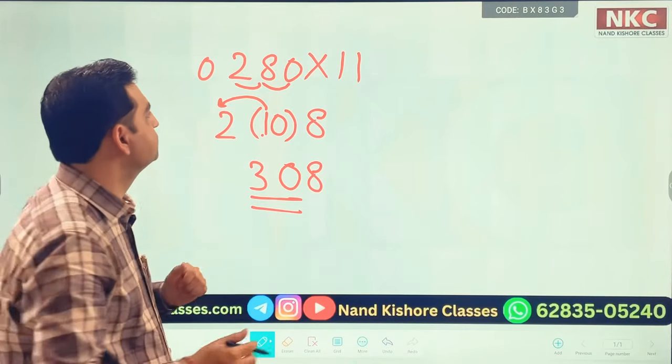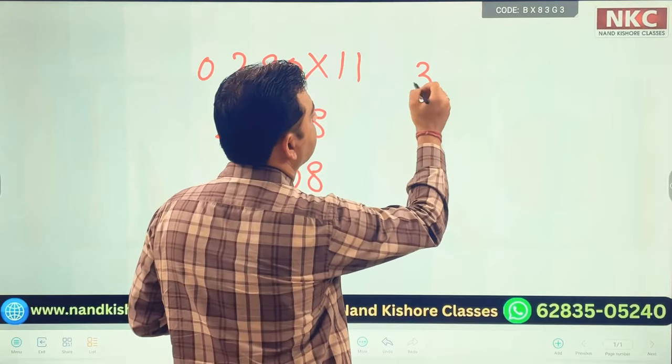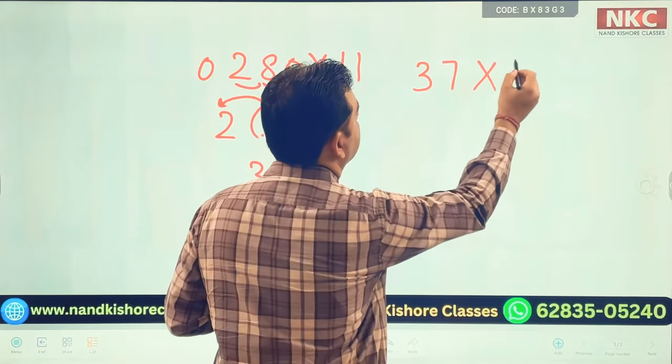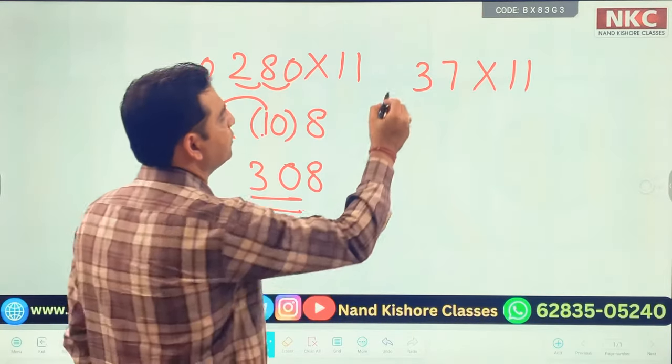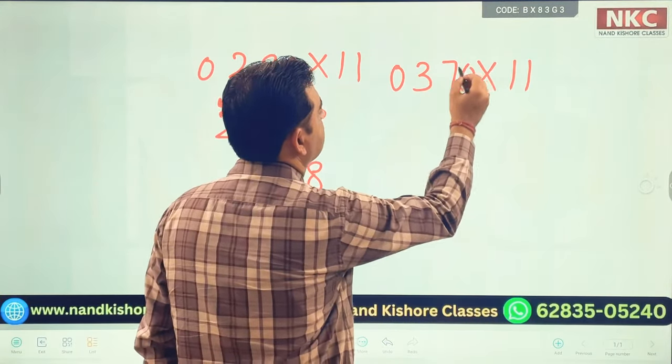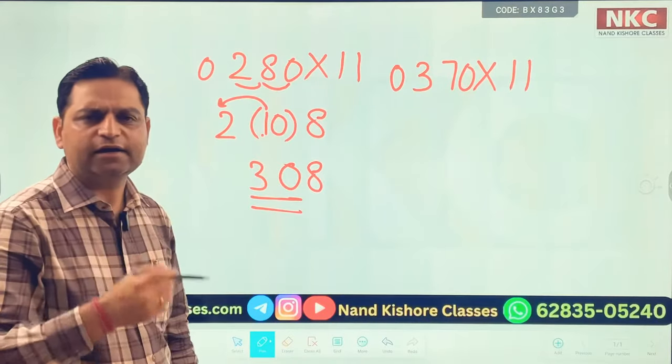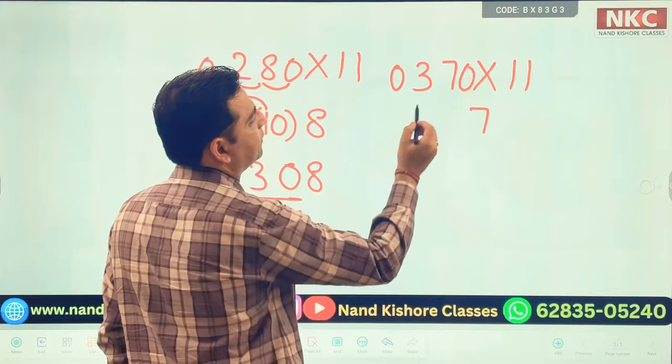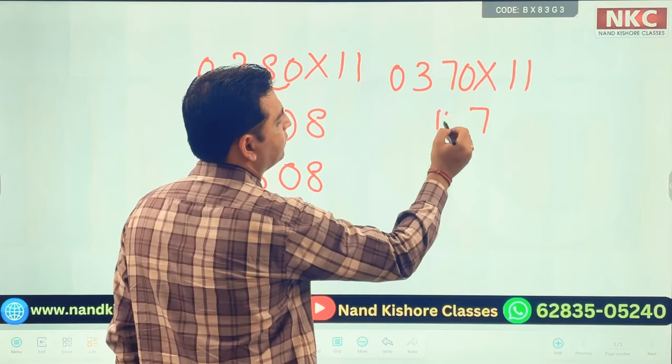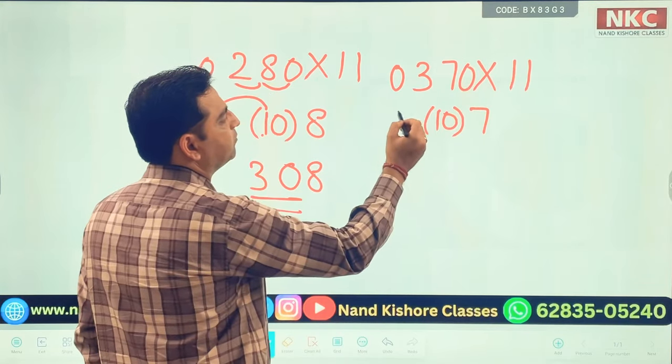I am doing one more question. Let's suppose you have 37 multiply 11. Now for 37 multiply 11, what will I do? I will place 0 on both sides, left and right. Start adding. 0 plus 7 is 7. 7 plus 3 is 10.